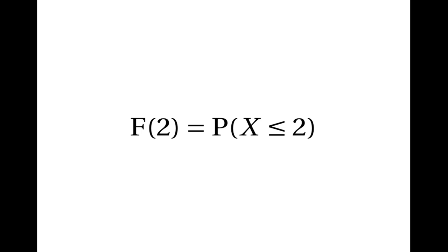For example, F of 2 is the probability that x is less than or equal to 2, and F of 3 is the probability that x is less than or equal to 3.